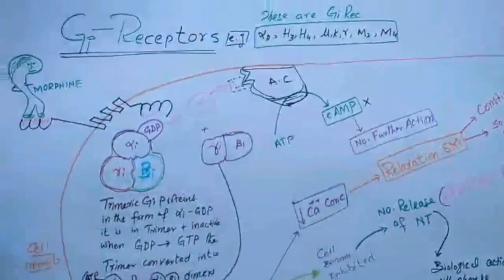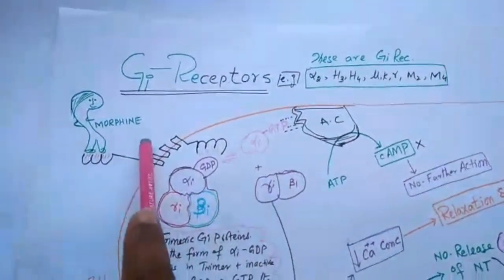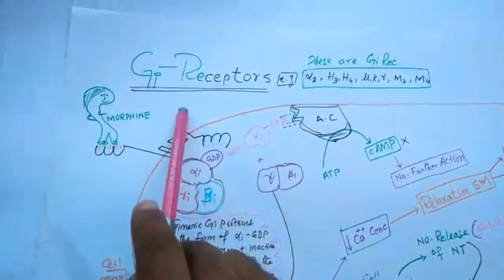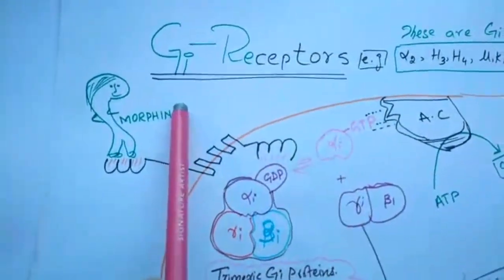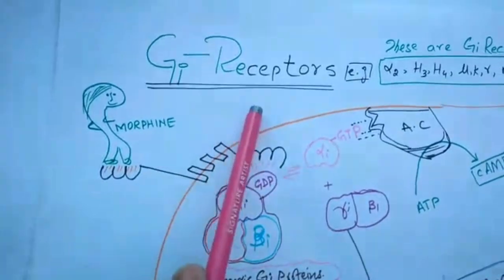Bismillah ar-Rahman ar-Rahim. Today we are again discussing serpentine receptor number two, type GI. GI receptor, inhibitory receptor.